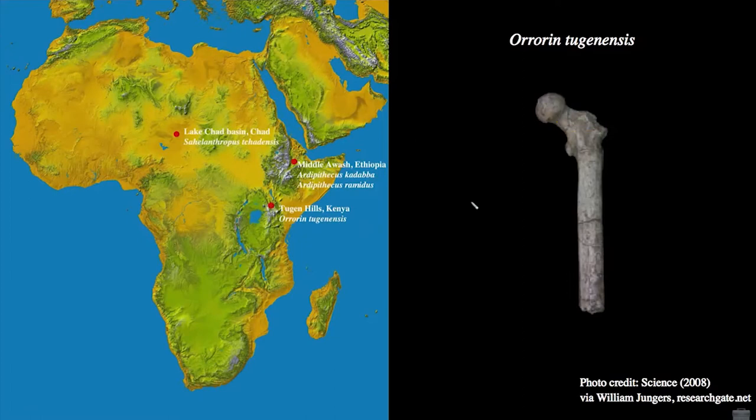Other features of this femur used to argue for bipedality are based on cross-sections of the femoral neck, examining the internal morphology using CT and x-ray data. When humans walk bipedally, we habitually load our femur in a single direction — we flex our feet forward and extend them behind us, going forwards and backwards, so we're regularly putting force on our femur in one plane of action.